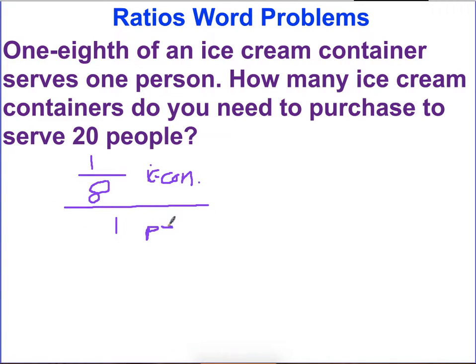So one eighth of an ice cream container per one person. This looks really strange because it looks like we have a fraction in a fraction. That's okay. I want to know how many I need to serve 20 people. There's two ways to do this. So one way is just like the first example.